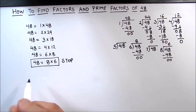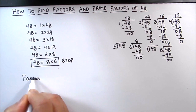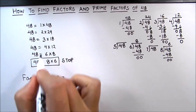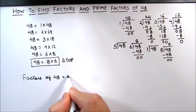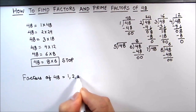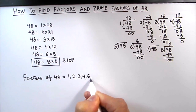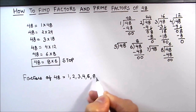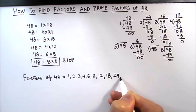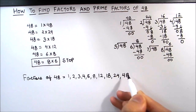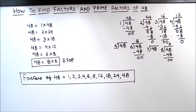We will not consider the repeated factors. Now we are going to write all the factors of 48 in increasing order. We start from 1 and go up: 1, 2, 3, 4, 6, 8, 12, 18, 24, and 48 are all the factors of 48. Now we'll find the prime factors of 48.